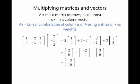On the left-hand side of the equal sign, I have the 2 by 3 matrix: 1, 2, 1, 0, negative 1, 3. That's 2 by 3, with 3 columns. I'm multiplying that times the 3 by 1 column vector 2, negative 1, 3. Notice, again, the same number of entries in the column vector as there are columns in the matrix.